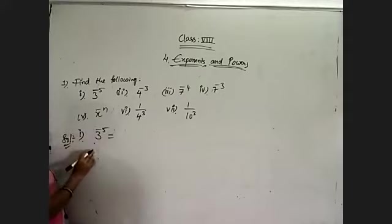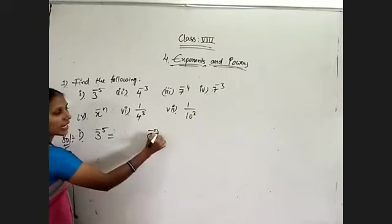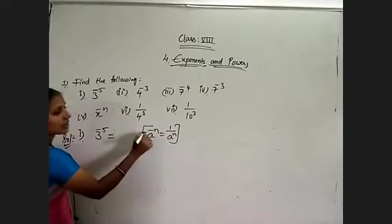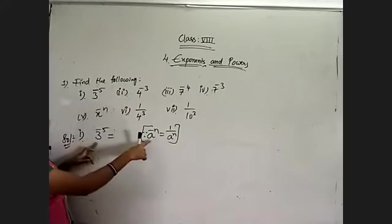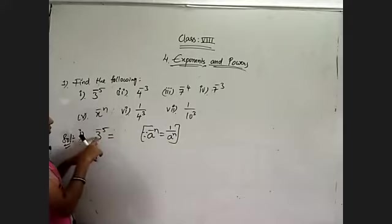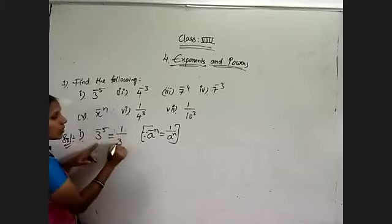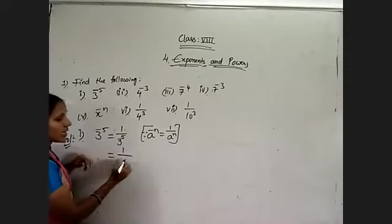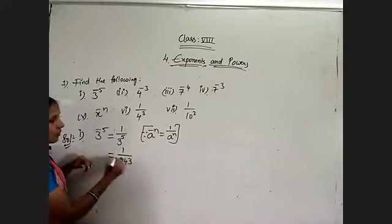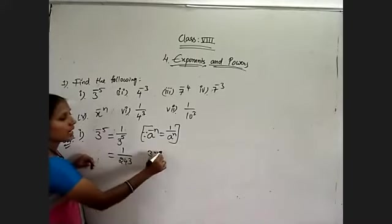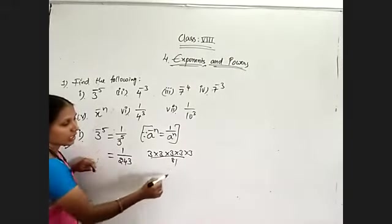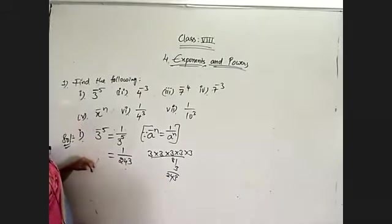Which law is useful here? That is a to the power of minus n. Its simplification is 1 by a to the power of n. Instead of a we have 3, and in place of n we have 5. So 3 to the power of minus 5 equals 1 by 3 to the power of 5. If you want the value: 3 power 5 is 243 — that is 3 multiplied 5 times, 3×3=9, 9×9=81, 81×3=243. But we only need to go up to 1 by 3 to the power of 5.